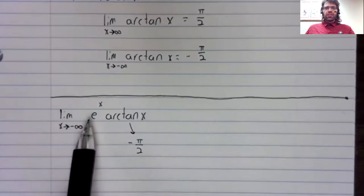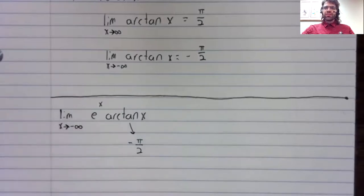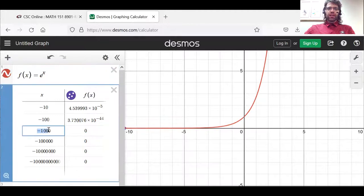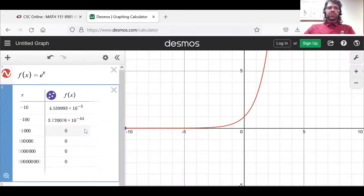Looking at e to the x—again, let's just look at this via decimals. Let's look at a table. As x approaches negative infinity, e to the x is approaching zero. In fact, it's approaching zero so fast that by the time x has reached negative 1000, Desmos is rounding e to the x down to zero.